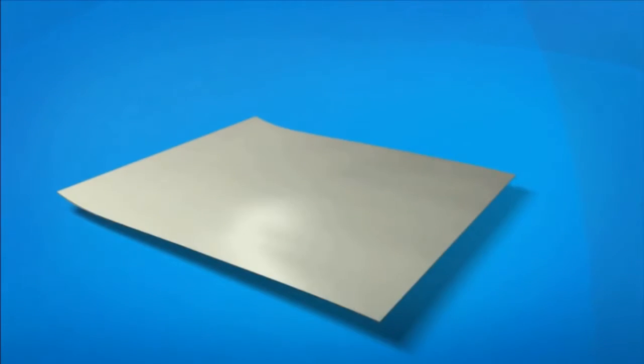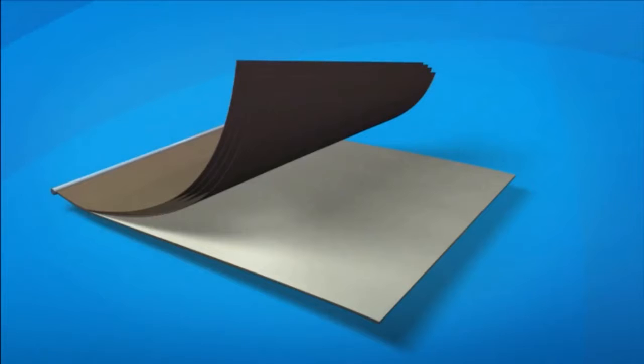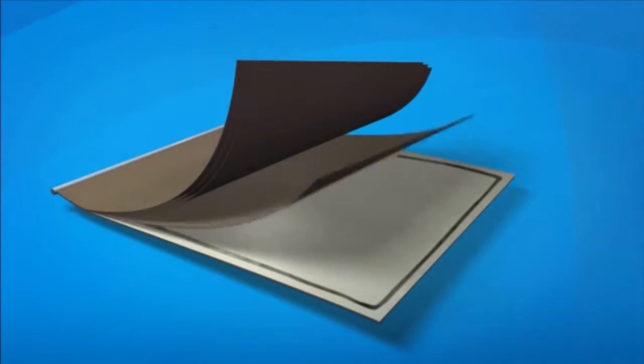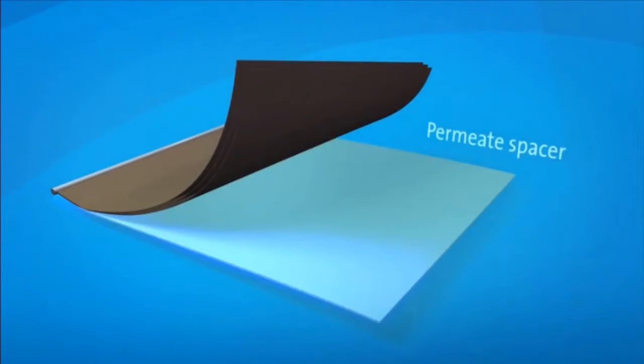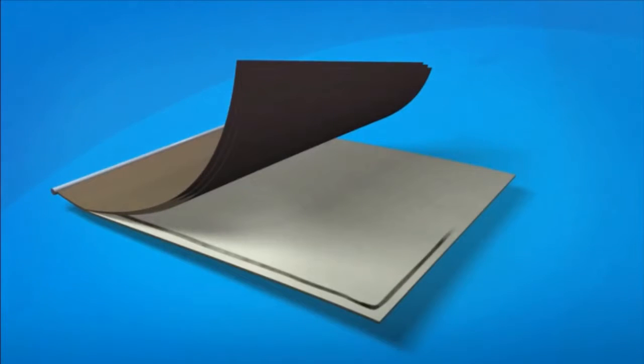A sheet of permeate spacer is added to the membrane sheets and feed channel spacer. This enables the final recycled water product, or permeate, to flow evenly across the entire membrane surface, even under high pressure.